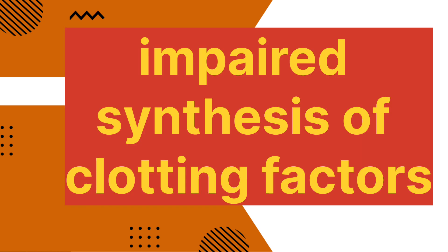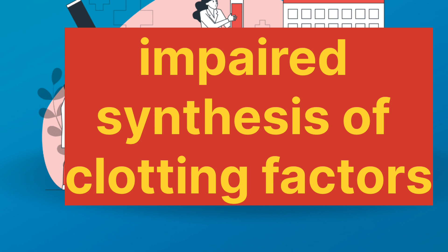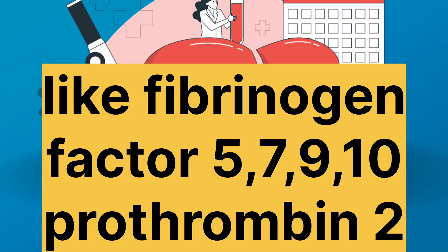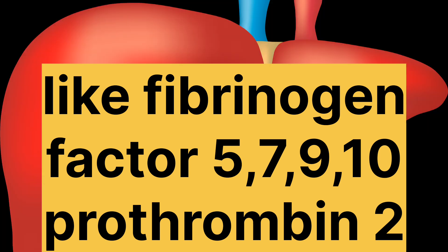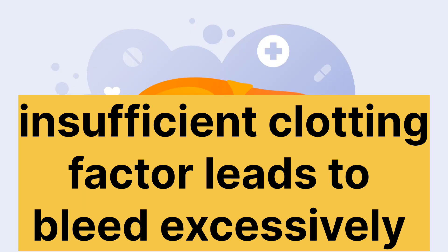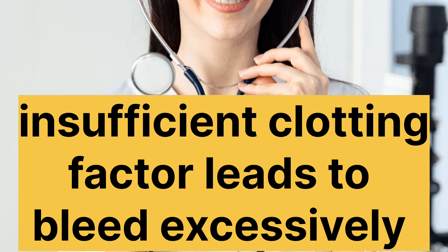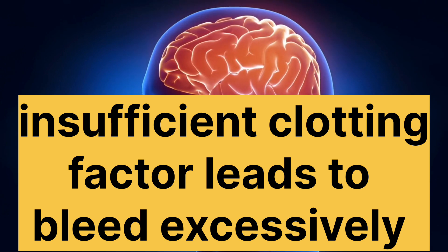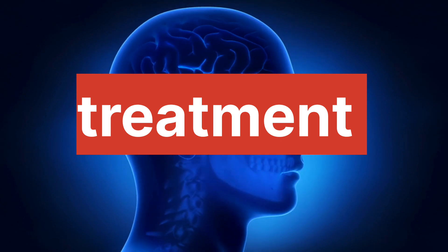Number two: hemorrhagic disorders. Liver damage can lead to a bleeding disorder due to impaired synthesis of clotting factors like fibrinogen, prothrombin, factor 5, factor 7, factor 9, and factor 10. The liver produces proteins essential for blood clotting, and when it is compromised, clotting factors may be insufficient. This can result in a tendency to bleed excessively. Conditions like cirrhosis, hepatitis, or liver failure are associated with this risk.